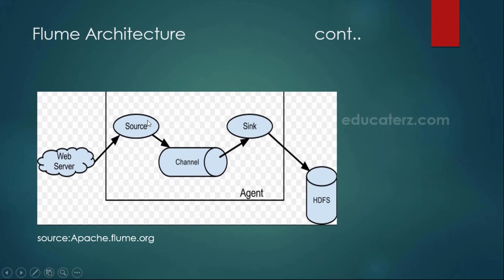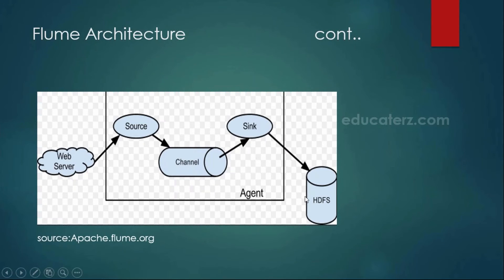The purpose of the source is to connect with several blocks and then place that data into your channel. The channel is a transient store — it stores some of the data inside. Once the channel data has been completed, it will be retrieved by the sink. The sink is responsible to retrieve the data from the channel and place it into your Hadoop Distributed File System.